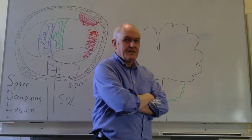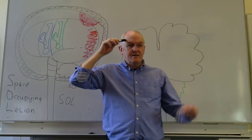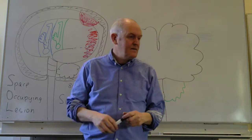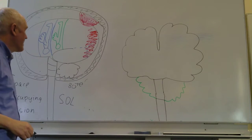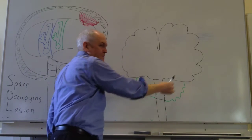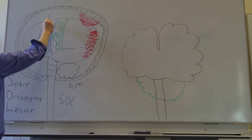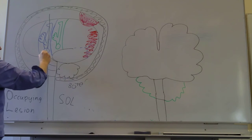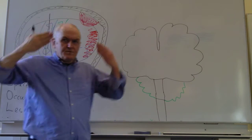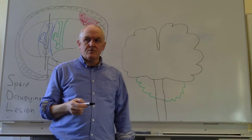Looking at it from the front, that's the right side of the brain and that's the left side. Now, let's imagine that this is a section of the brain at the level of the motor cortex. We've taken a big machete and chopped someone's brain — that's called a coronal section.